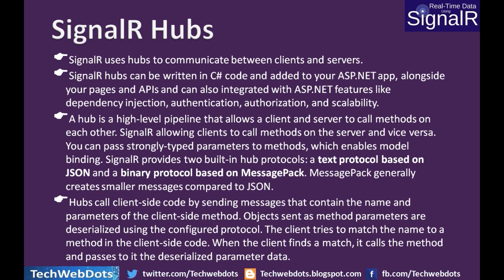What is the SignalR hub? SignalR uses hubs to communicate between client and server. SignalR hubs can be written in C-Sharp code and added to your ASP.NET app along with your pages and APIs, and can be integrated with ASP.NET features like dependency injection, authentication, authorization, and scalability. A hub is a high-level pipeline that allows a client and server to call methods on each other. SignalR allows clients to call methods on the server and vice versa. You can pass strongly-typed parameters to the methods, which enables model binding.